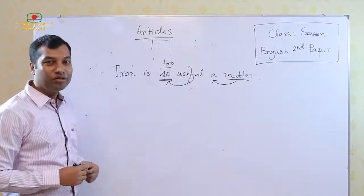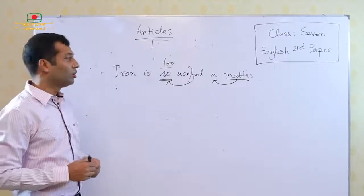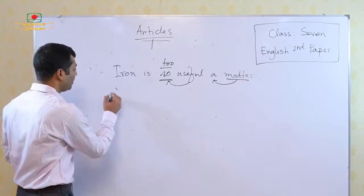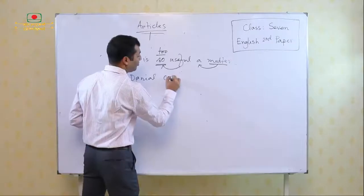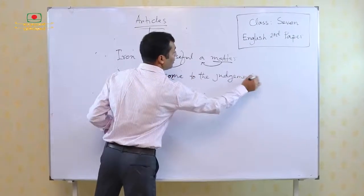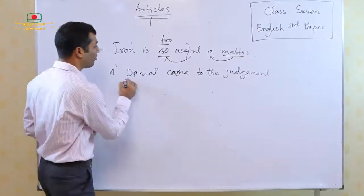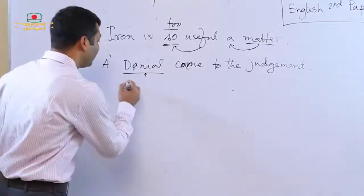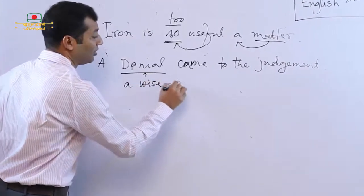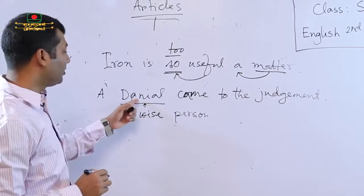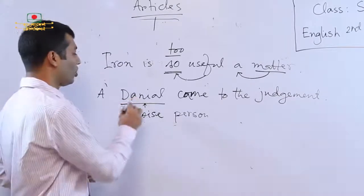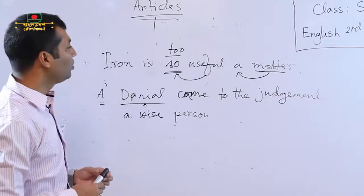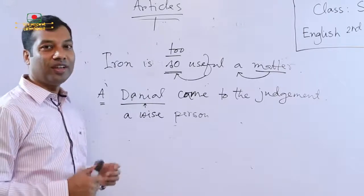Sometimes some proper nouns are made into common nouns. And in this case, if you want to make a proper noun a common noun, we need to use an article. For example: 'A Daniel came to the judgment.' You know that Daniel is the name of a person, so basically this is a proper noun. But here it is working as a common noun. So in this case, you need to use the article A or AN before the proper noun.